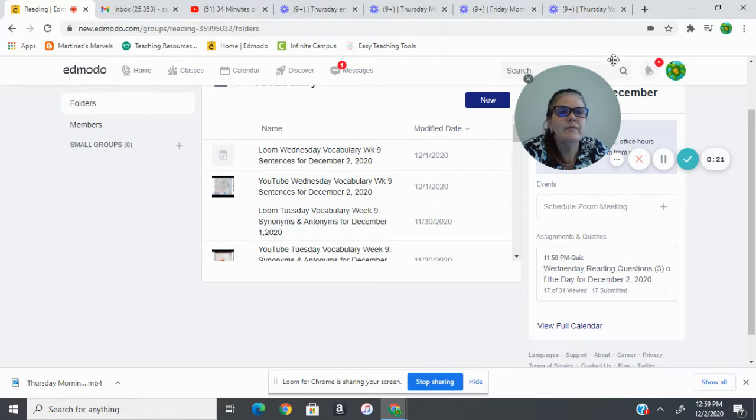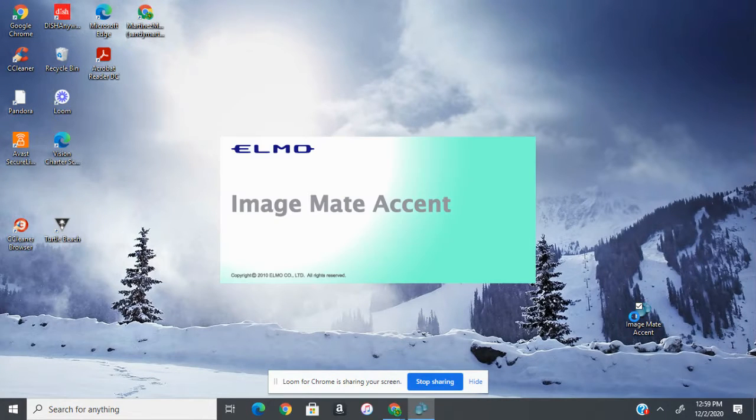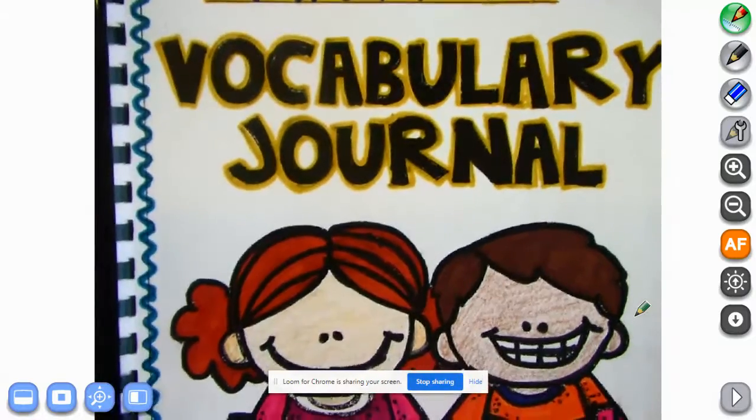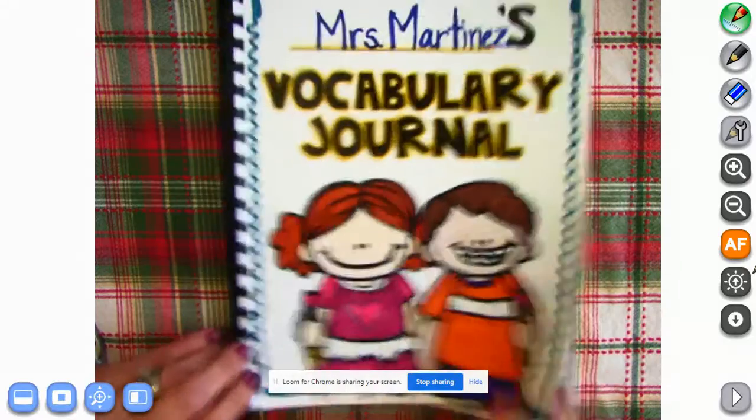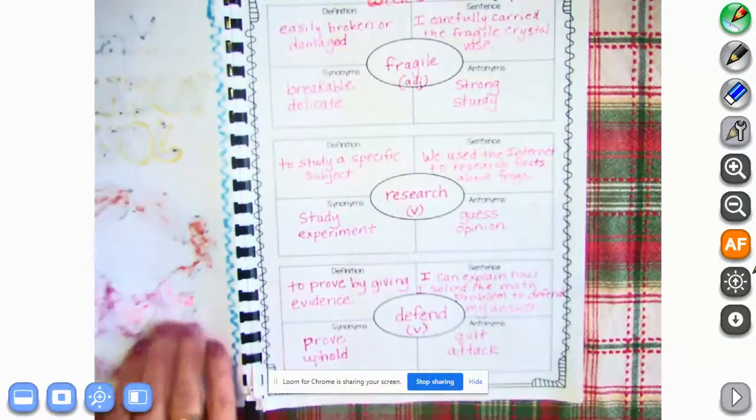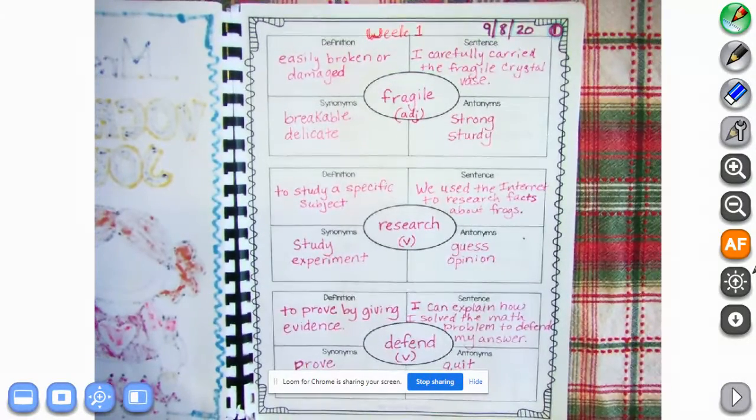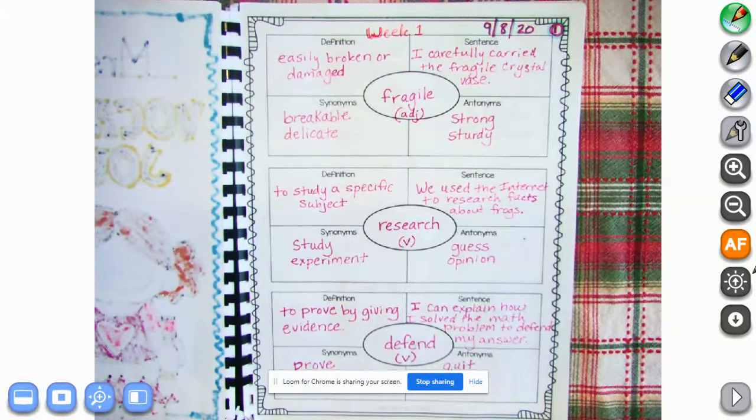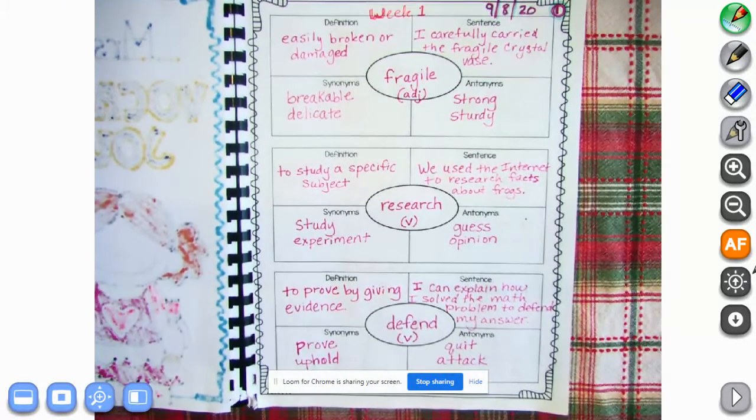All right, let me go ahead and grab the camera. You grab your vocabulary journal. All right, so we have learned so many vocabulary words this year. The first page that we did: fragile, research, and defend. If you're missing anything on that page, I would suggest that you go ahead and push pause right here and get those written down.